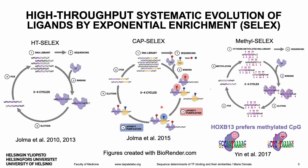In co-SELEX, DNA is incubated with two TFs, and two consecutive affinity purification steps are used to enrich sequences bound by both TFs. SELEX can identify composite motifs and heterodimeric motifs, which can occur in many different orientations and spacings. They also use methylated DNA libraries to study a TF's preference for methylated or unmethylated CpGs at their binding sites.